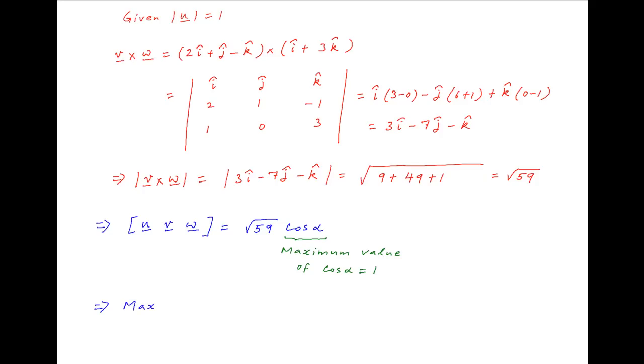Therefore, the maximum value of the scalar triple product u is equal to square root of 59, which is the required answer.